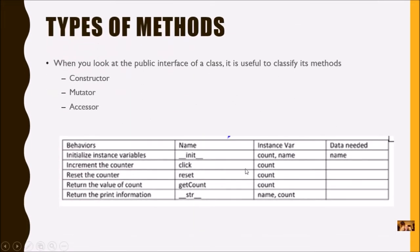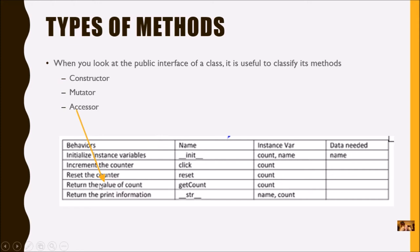So what are the types of methods? When you look at the public interface of a class, it's useful to classify its methods — that helps you know how to define it and how to call it from the function. There are three main types: the constructor, the mutator, and the accessor. The constructor initializes instance variables. A mutator changes something in the object. An accessor gets information from the method that the function might need, and it usually has a return.